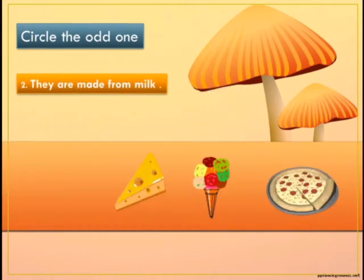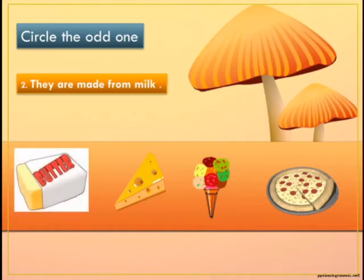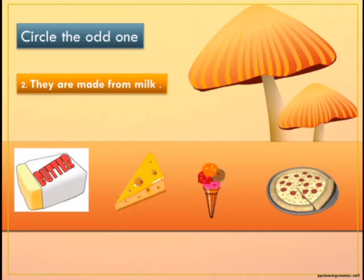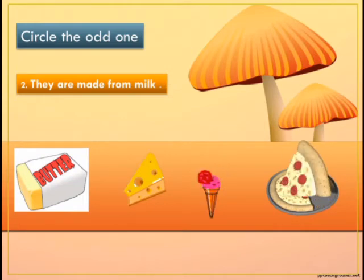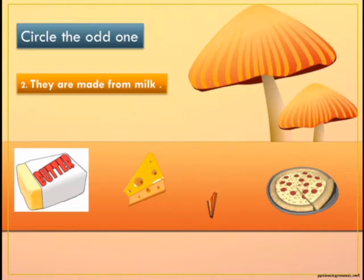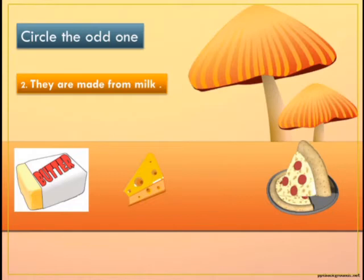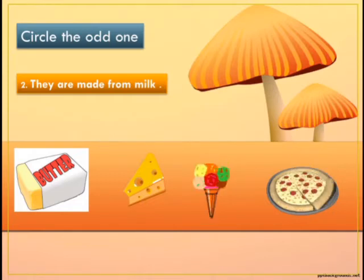Next, we have a set of things that are made from milk. Butter is made from milk, cheese is also made from milk, and ice cream is also made from milk. But what about a pizza? Is it made from milk? No, it is not made from milk. So it is the odd one and we have to circle it.